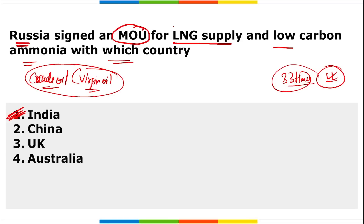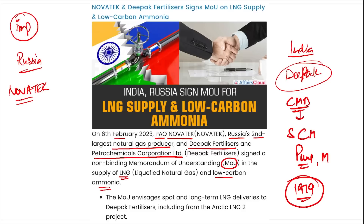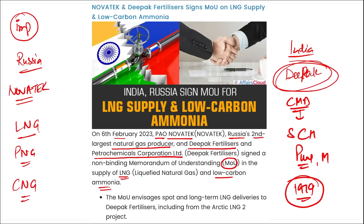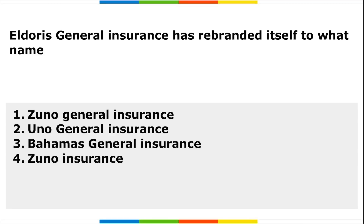The two countries that signed an MOU for the supply of LNG and low-carbon ammonia are Russia and India. From Russia — Novatek; from India — Deepak Fertilizers. Remember: LNG is liquefied natural gas, PNG is petroleum natural gas, and CNG is compressed natural gas.